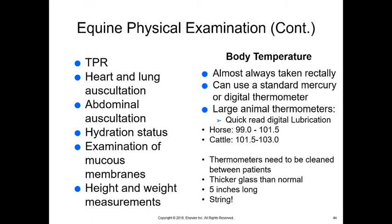Equine physical examination starts with a TPR — temperature, pulse, and respiration — just as with any animal. Body temperature is taken rectally using either a mercury or digital thermometer. Large animal thermometers are typically longer, about five inches, and usually have a hook at the end to tie a string to them. We keep a string tied to the thermometer because if you insert it, it can get drawn in and be difficult to retrieve.